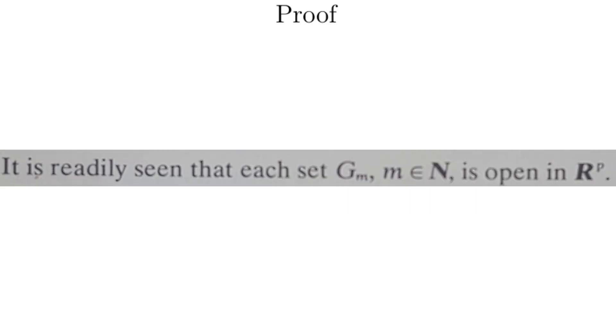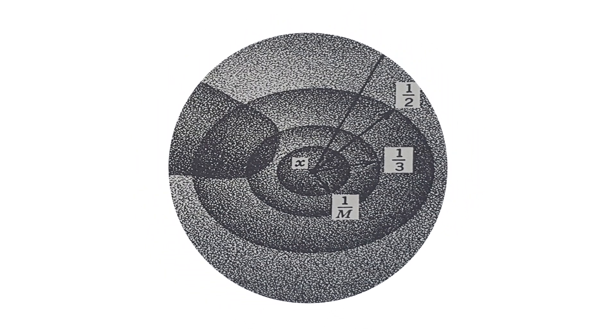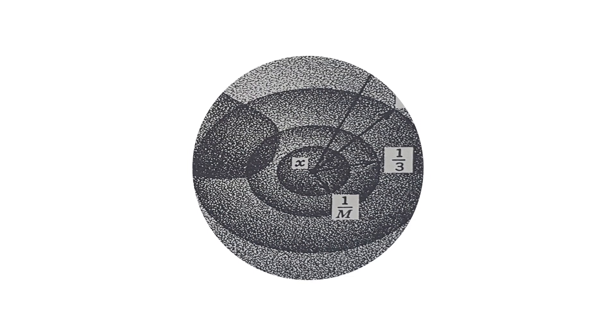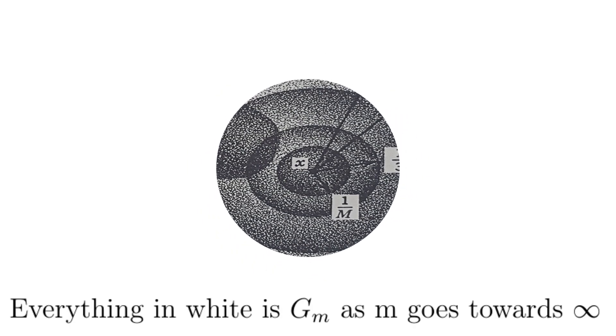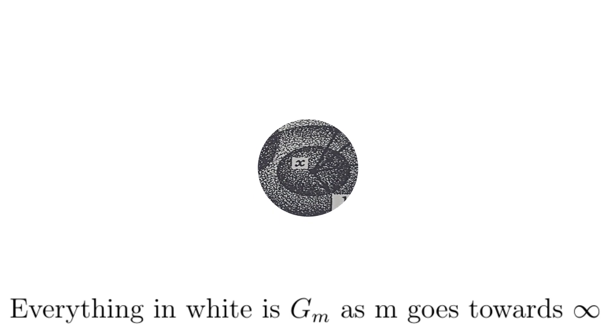It is readily seen that each set G_m, m in the natural numbers, is open in R^p. A way to quickly see this though, and the reason he says it is readily seen, is because each one of the G_m's is the complement of a closed ball, or an open ball that includes the crust. If a set is the complement of a closed ball, then it's open, since complements of open sets are closed. Remember, complements of open sets are closed, and complements of closed sets are open.